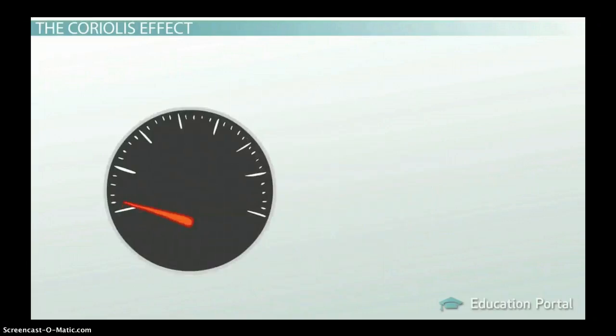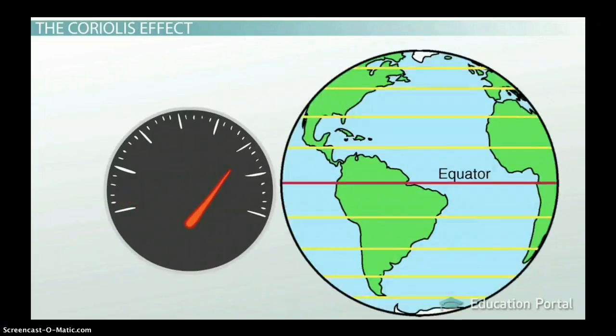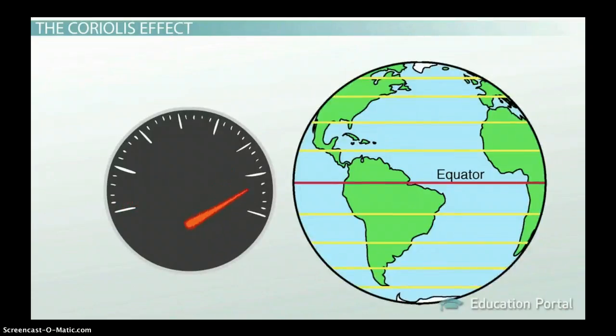The Coriolis effect also differs depending on wind speed and latitude. When wind travels faster, it gets deflected more. Objects that are higher in latitude, so closer to the polar regions, deflect more than those at the equator.